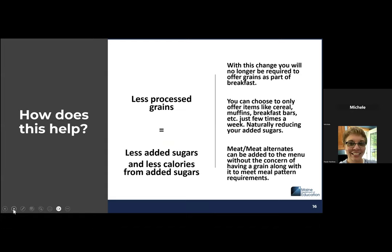How does this help? Less processed grains equals less added sugars and less calories from added sugars. With this change, you will no longer be required to offer grains as a part of breakfast. You can choose to only offer items like cereals, muffins, breakfast bars just a few times a week, naturally reducing your added sugars. And meat-meat alternates can be added to the menu without the concern of having a grain along with it to meet the meal pattern requirements. We want to still make sure kids eat whole grains, but focus on the really nutrient-dense whole grains versus the ones with a lot of added sugars.